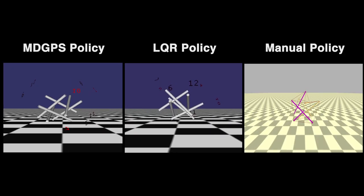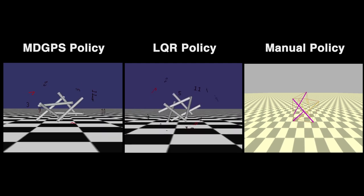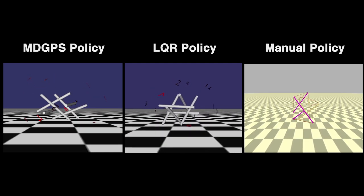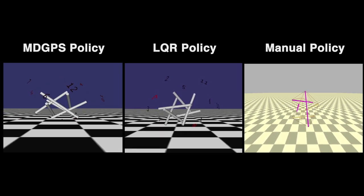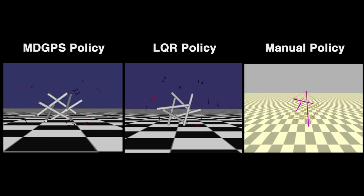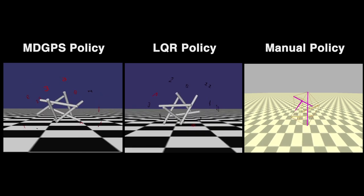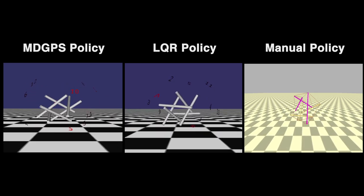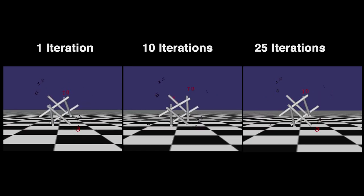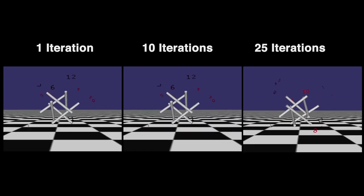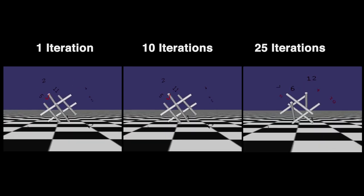With a metric of speed maximization, we found that Mirror Descent Guided Policy Search learned a much more effective locomotion policy than either the traditional control scheme linear quadratic regulator LQR or a standard hard-coded manual policy. It can be seen that the smoothness and effectiveness of the simulated robot's locomotion increases drastically throughout the training process.